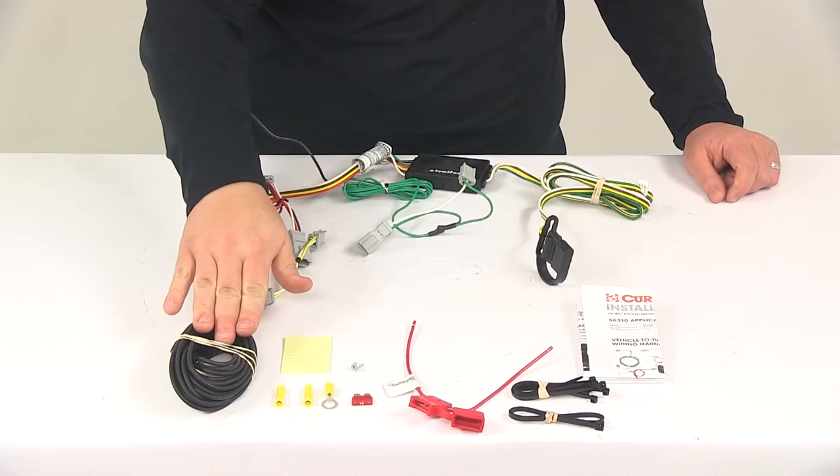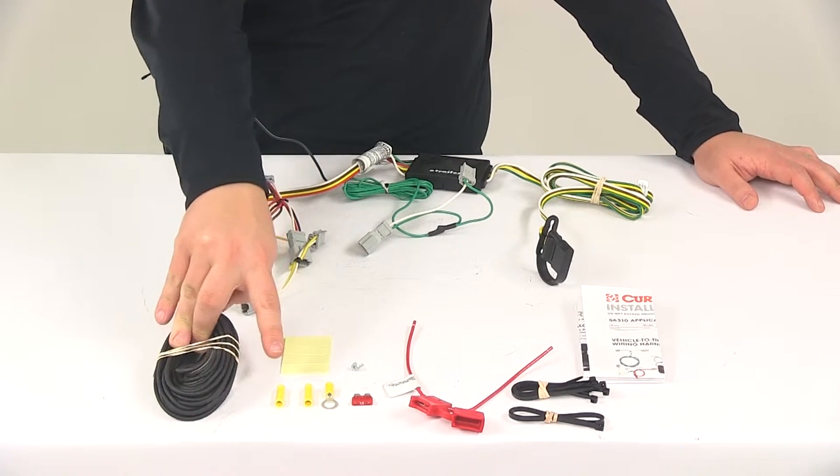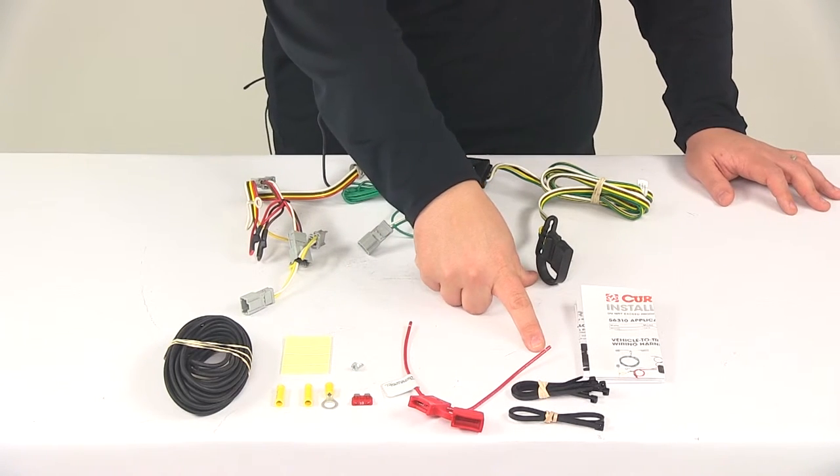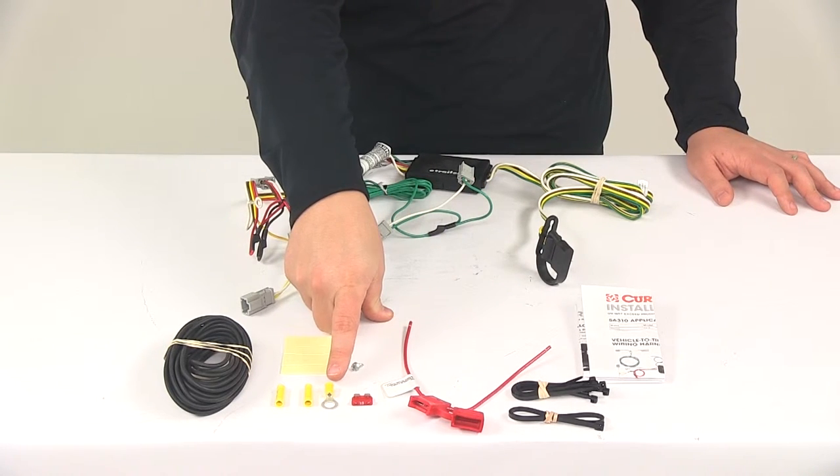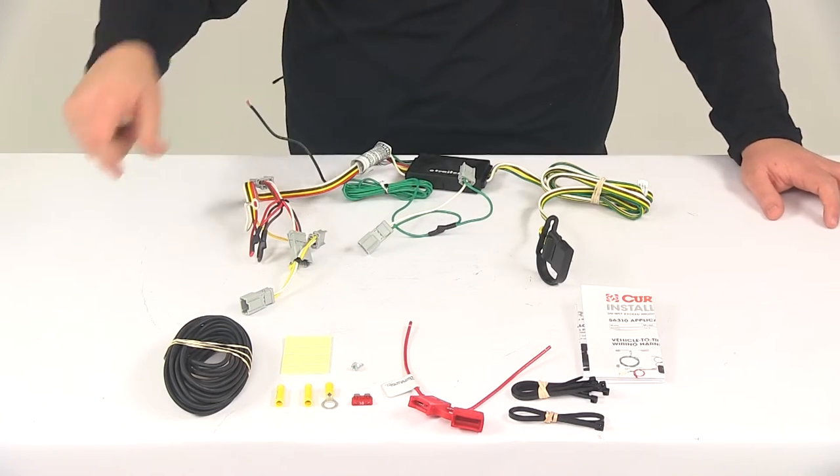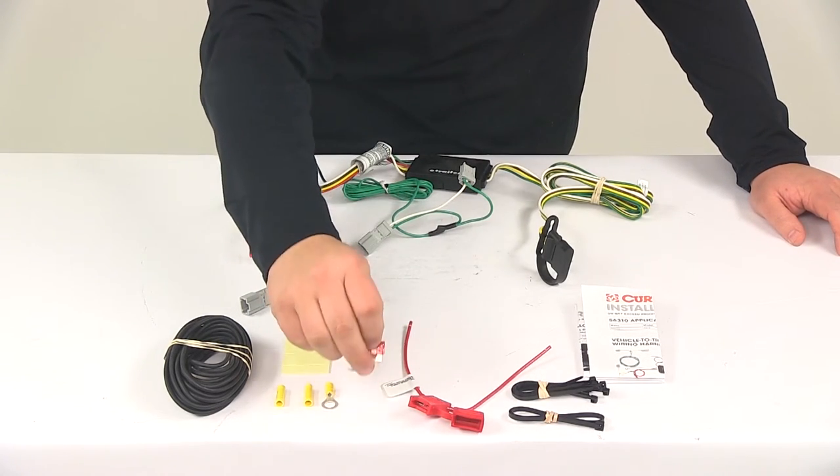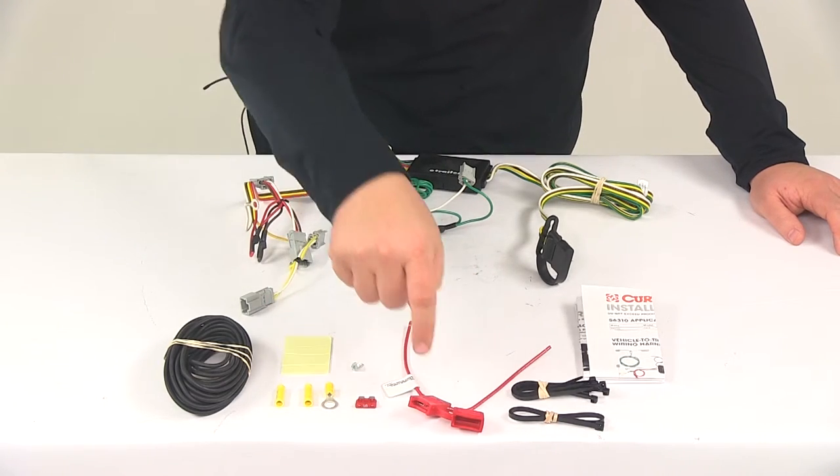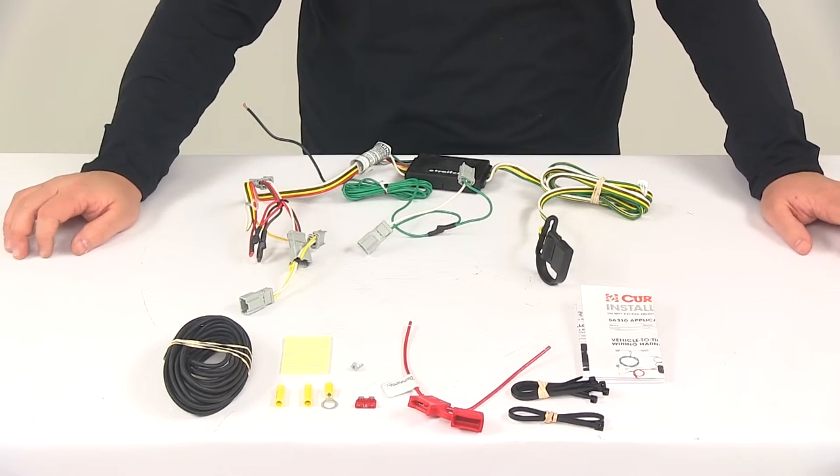The other end of the black wire gets another butt connector attached to it, and that connects to one half of the fuse holder. The other half of the fuse holder gets a ring terminal attached to it, and that ring terminal gets attached to the positive post on the vehicle battery. This kit comes with your 10 amp fuse. It goes right here in the fuse holder, and it's got the cap that goes over to keep it safe and secure.